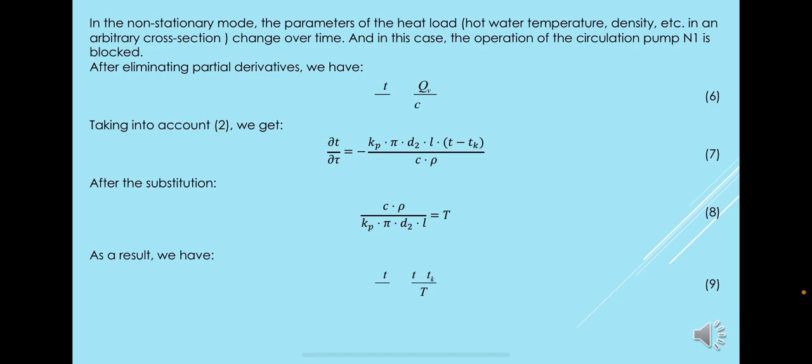In the non-stationary mode, the parameters of the heat load, hot water temperature, density, etc., in arbitrary cross sections change over time. In this case, the operation of the circulation pump N1 is blocked. After eliminating partial derivatives, we have these equations. Taking into account equation 2, we get this. After the substitution, we get this, and as a result, we get this.